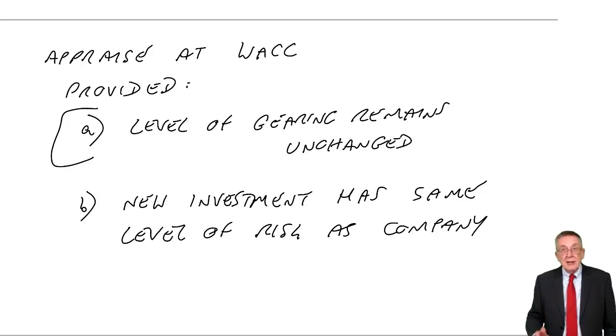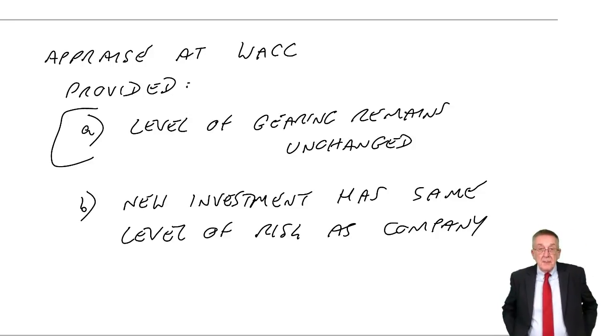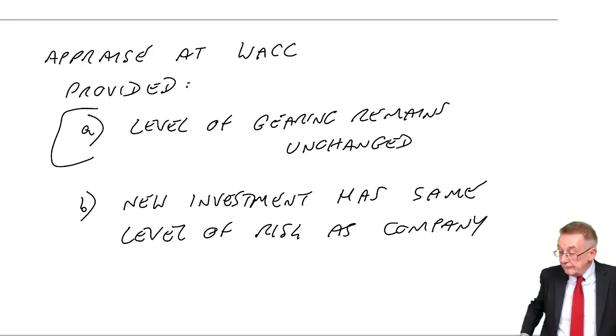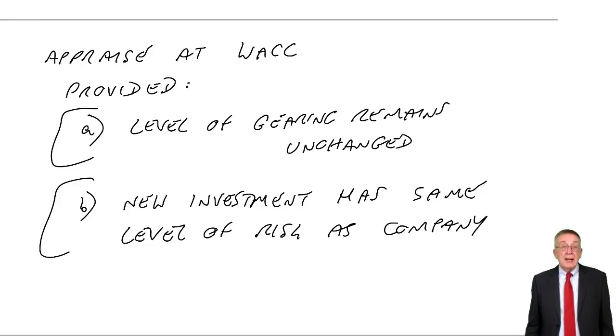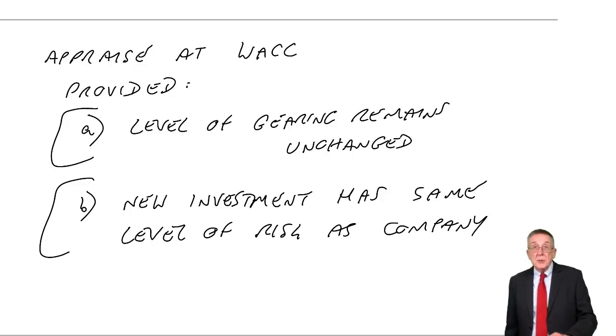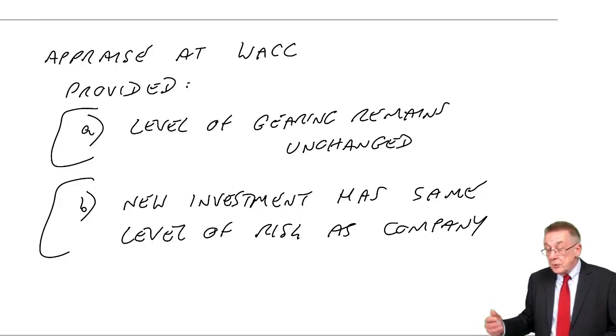But one, as regards the level of gearing, two gentlemen, Mr. Modigliani and Mr. Miller, did a lot of work on that. And although they did come up with four million things, you're not expected to do any numbers, but you are expected to be aware of their theories. As far as the investment having a different level of risk as the company, well, there's a theory there called capital asset pricing model, where there are a few numbers, but I think you'll find them relatively straightforward. However, I'll deal with both of those in the following, in the next two chapters.